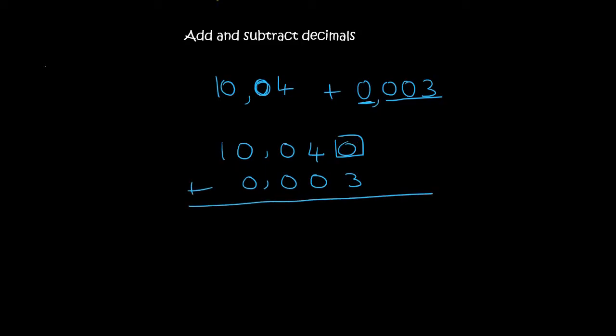Now you can add. 0 plus 3 is 3. 4 plus 0 is 4. 0 plus 0. 0 plus 0. And 10. So 10.043.